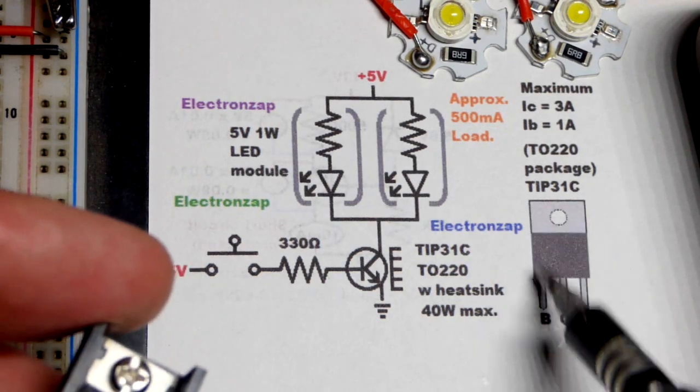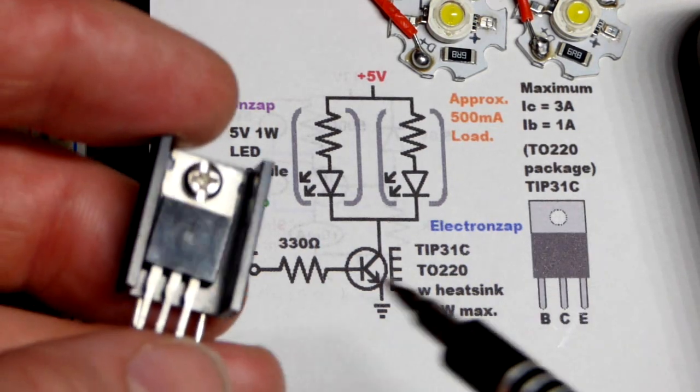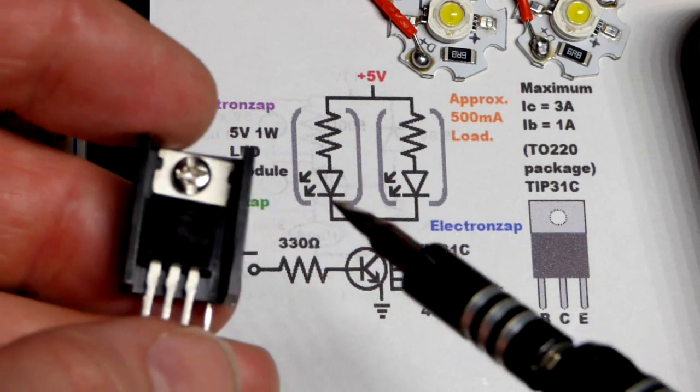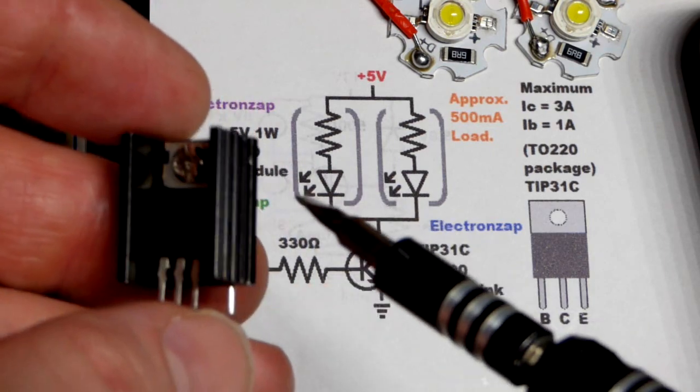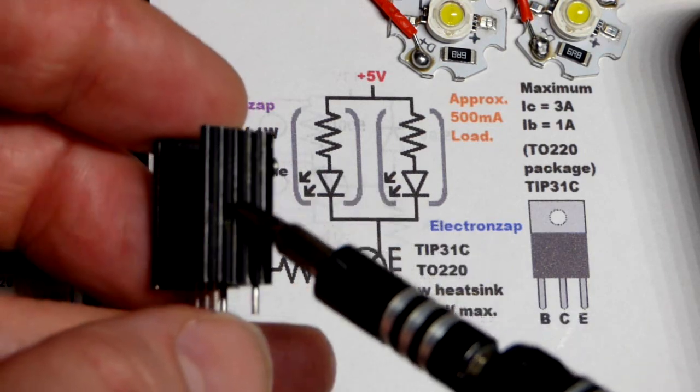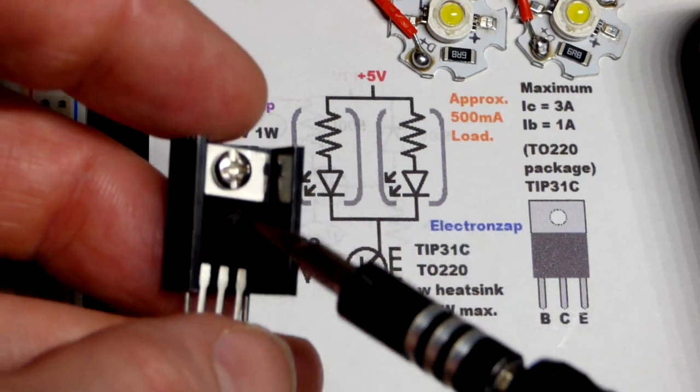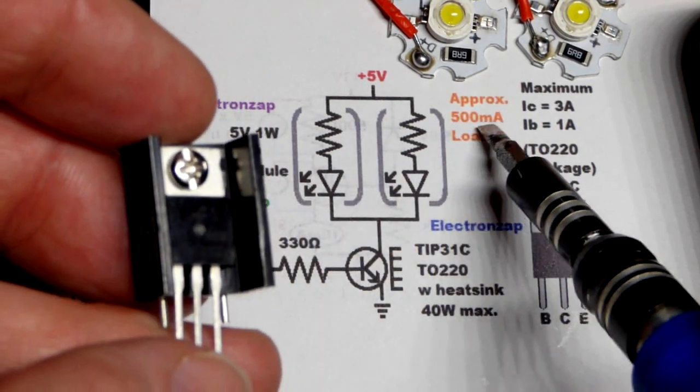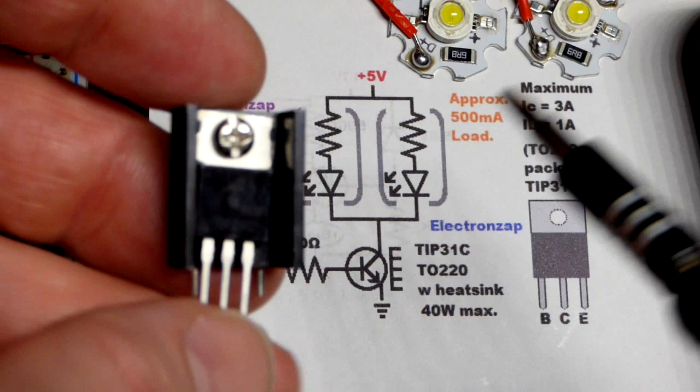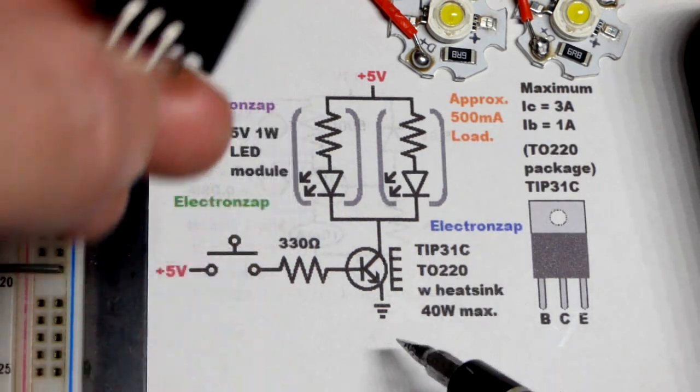It's in the TO220 package that looks like that. The kit that I got these from and some other ones I bought have these heat sinks, so I just added the heat sink. But I think when it comes to 500 milliamps when we're switching it, probably don't need the heat sink, but I added it anyways.